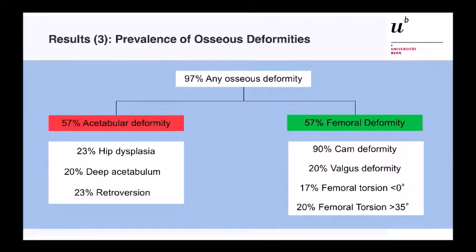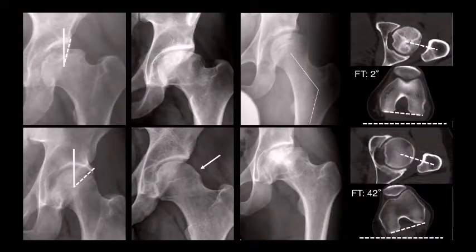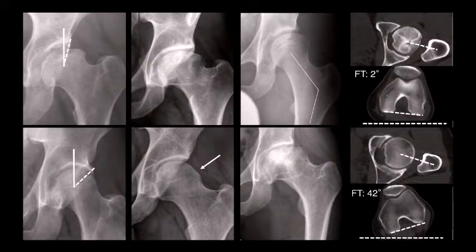97% of all cases had an associated osseous deformity. More than half had an acetabular deformity, a quarter had hip dysplasia or a deep acetabulum, and 23% had retroversion. The range of pathomorphologies was really widespread. Half of the patients also had an associated femoral deformity — CAM deformity in almost all of those cases — along with valgus deformity or reduced or increased femoral torsion. There is no typical pattern, but basically all cases have some kind of additional pathomorphological abnormality.